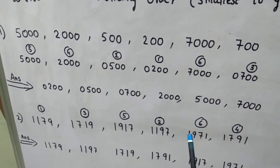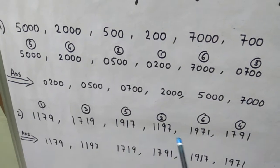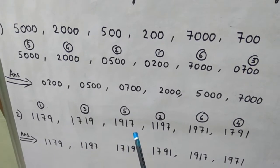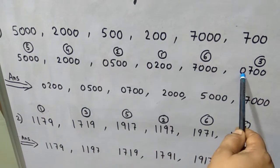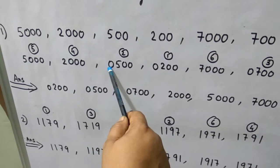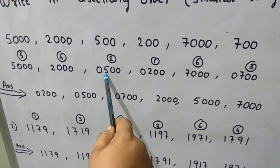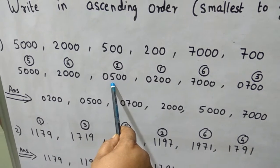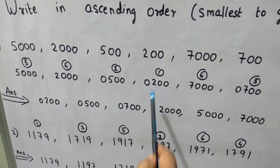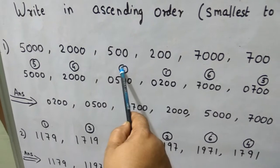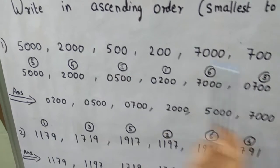Now, when the 1000s place is the same, what will you do? You have to see the 100s place. Looking at the 1000s place: 5, 2, 0, 0, 7, and 0 — there are three zeros. For those three zeros, look at the 100s place: 5, 2, and 7. Which is smallest? 2 — put rank 1. Then 5 — put rank 2. And 7 — put rank 3. The three 3-digit numbers are now ranked.